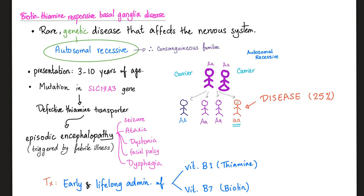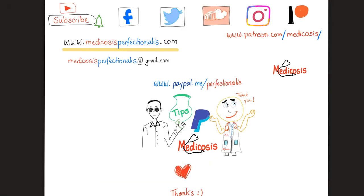Biotin-thiamine-responsive basal ganglia disease: rare genetic disease affecting the nervous system, autosomal recessive — therefore consanguinity, and 1 in 4 offspring will have the disease. Defective thiamine transporter causes episodic encephalopathy with seizure, ataxia, dystonia, facial palsy, and dysphagia. Treatment is early and lifelong administration of vitamin B1 (thiamine) and vitamin B7 (biotin).